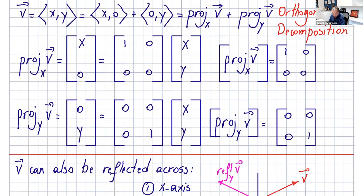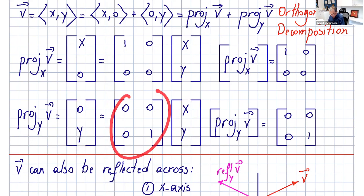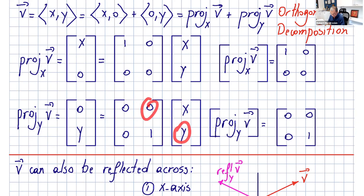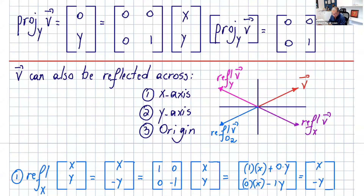The projection of v onto the y-axis, in matrix notation, gives the vector (0, y). You can obtain this by multiplying any vector in R2 by this matrix. Let's verify: 0 times x is 0, plus 0 times y is 0, giving 0. Then 0 times x is 0, and 1 times y is y. So the matrix for the projection of v onto the y-axis is given by that.